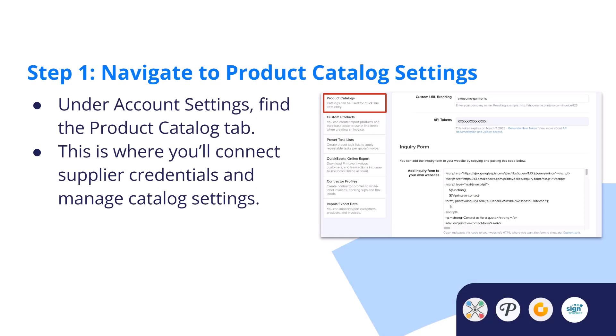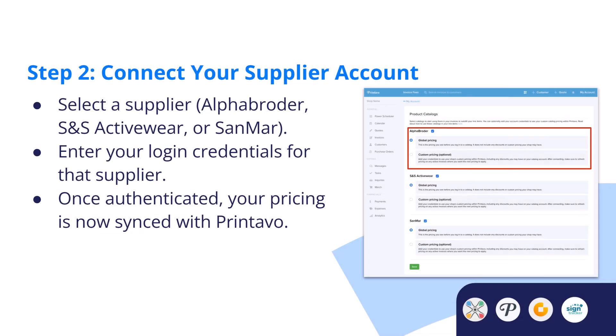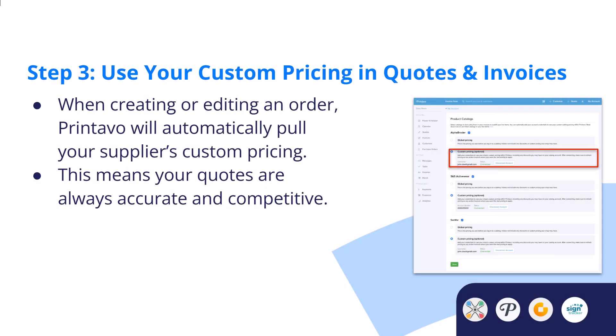Here's how this works in Printavo. Step one: navigate to Product Catalog Settings under Account Settings and find the Product Catalog tab — this is where you'll connect supplier credentials and manage catalog settings. Step two: connect your supplier account by selecting a supplier — Alpha Broder, SNS Activewear, or SanMar — enter your login credentials, and once authenticated, your pricing is synced with Printavo.